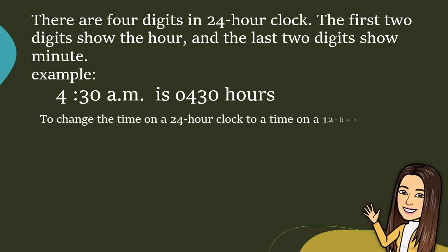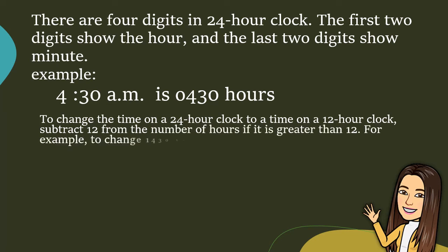To change the time on a 24 hour clock to a time on a 12 hour clock, subtract 12 from the number of hours if it is greater than 12.